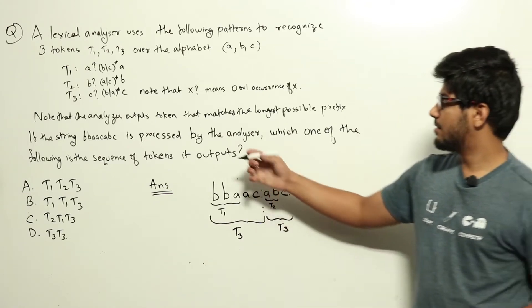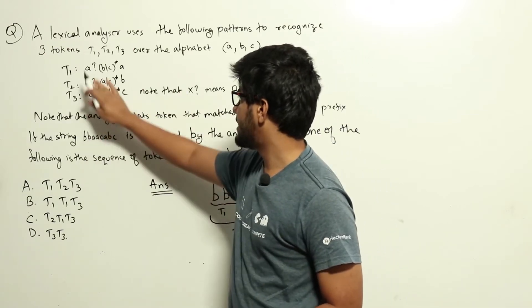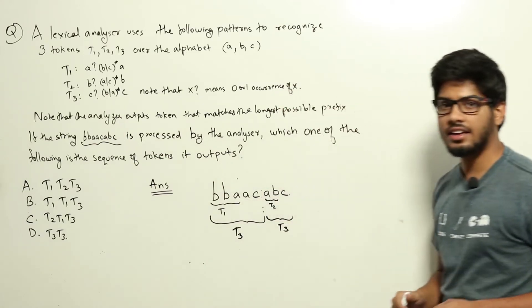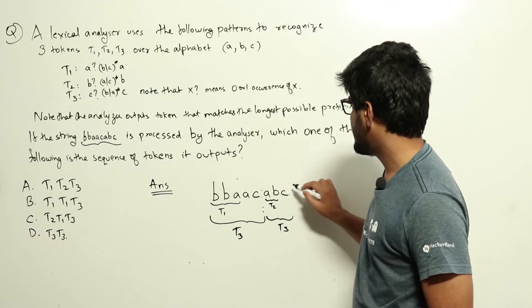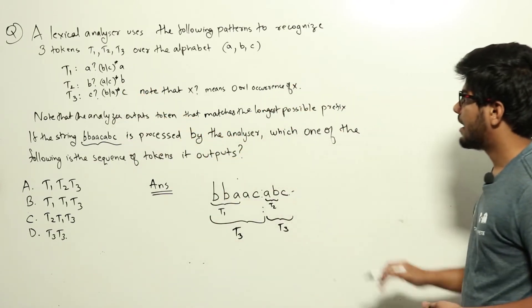So this is a question from compiler design token matching section. We have been given this string bbaacabc and we can match this string to any one of these tokens, and they are asking if for this string what will be the tokens outputted.